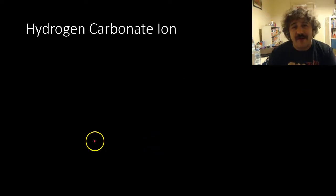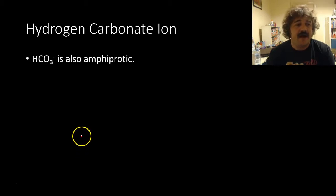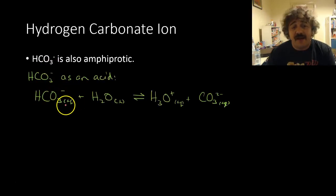The hydrogen carbonate ion is a really interesting example, and that's actually one of the things that makes it work so well as a buffer. So hydrogen carbonate is amphiprotic, and it can act as an acid.